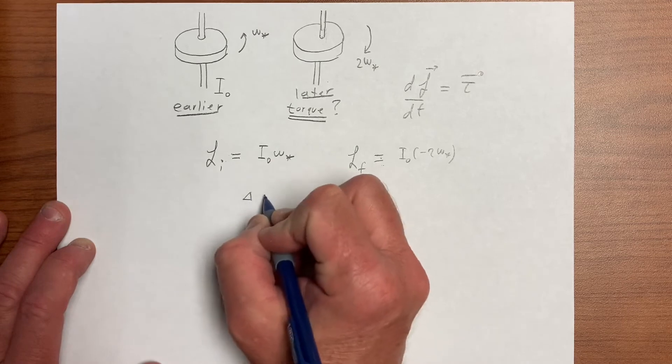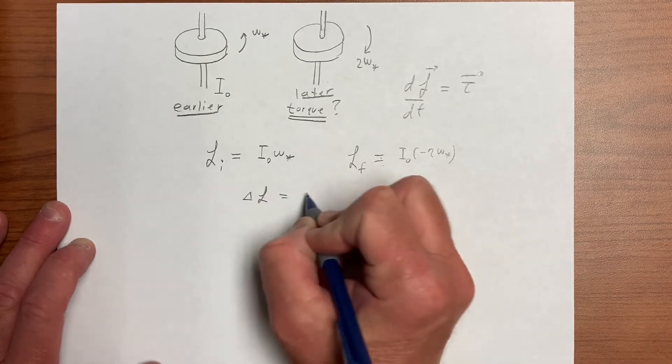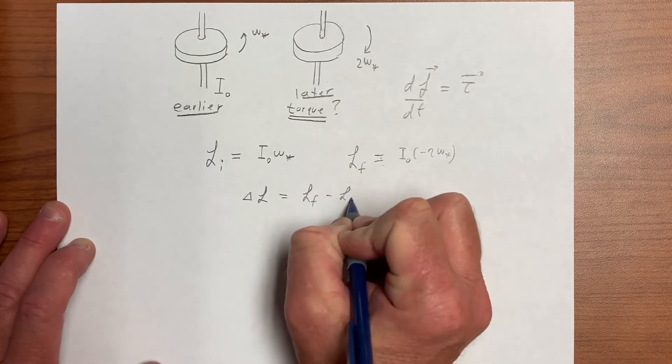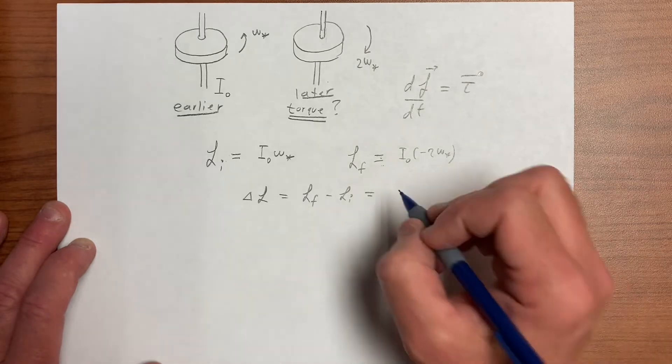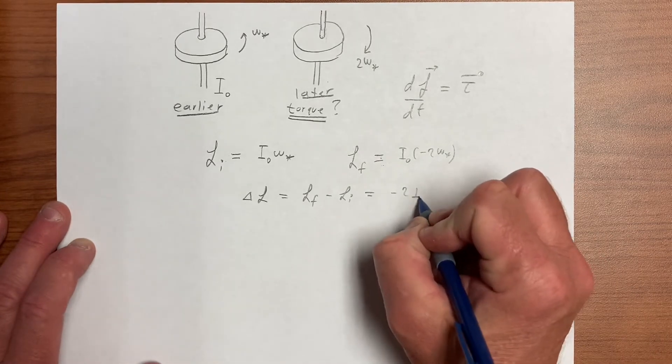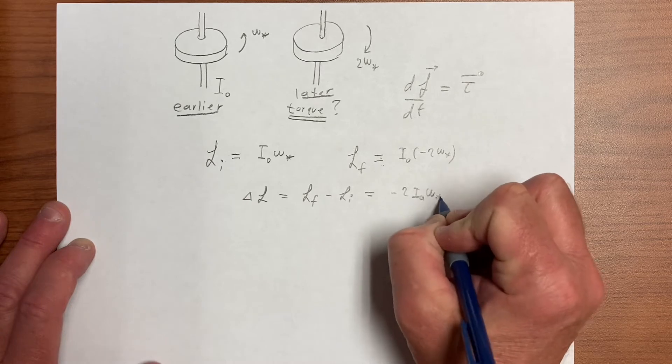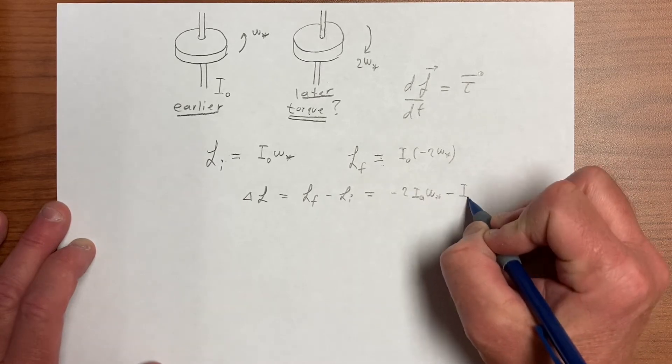So let's look to see whether the initial equals the final, or what's the difference in the angular momentum, which is L final minus L initial, and so that is minus 2 I naught omega star minus I naught omega star.